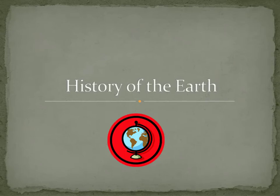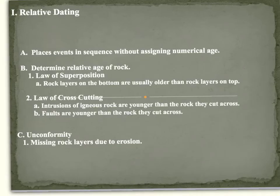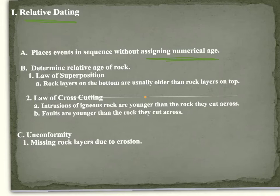Our history of earth notes include how we know about our past. One way to get a glimpse into our past is a method called relative dating. It's not putting an exact number on something, but it's saying that rock is relatively older than this rock, or this is the youngest rock.